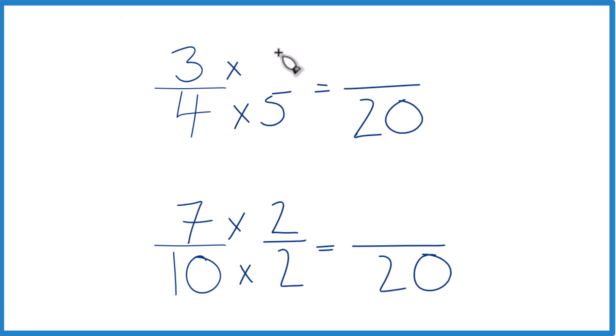Let's multiply 3 times 5 up here. 3 times 5 is 15. 7 times 2 is 14. Same denominator, compare the numerators.